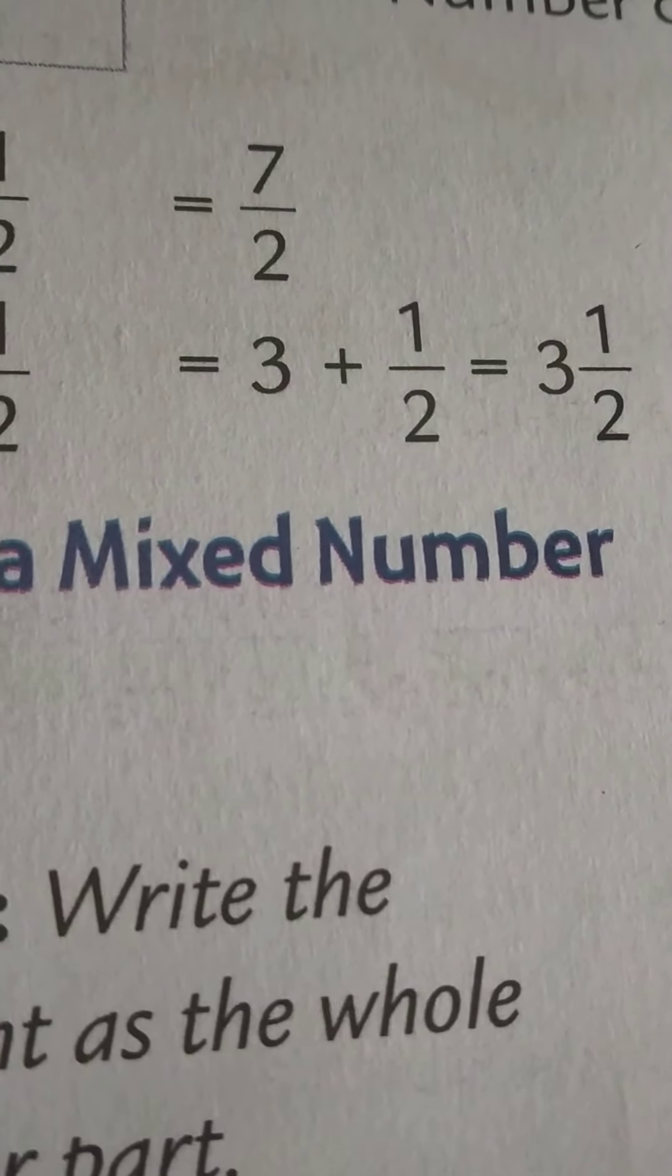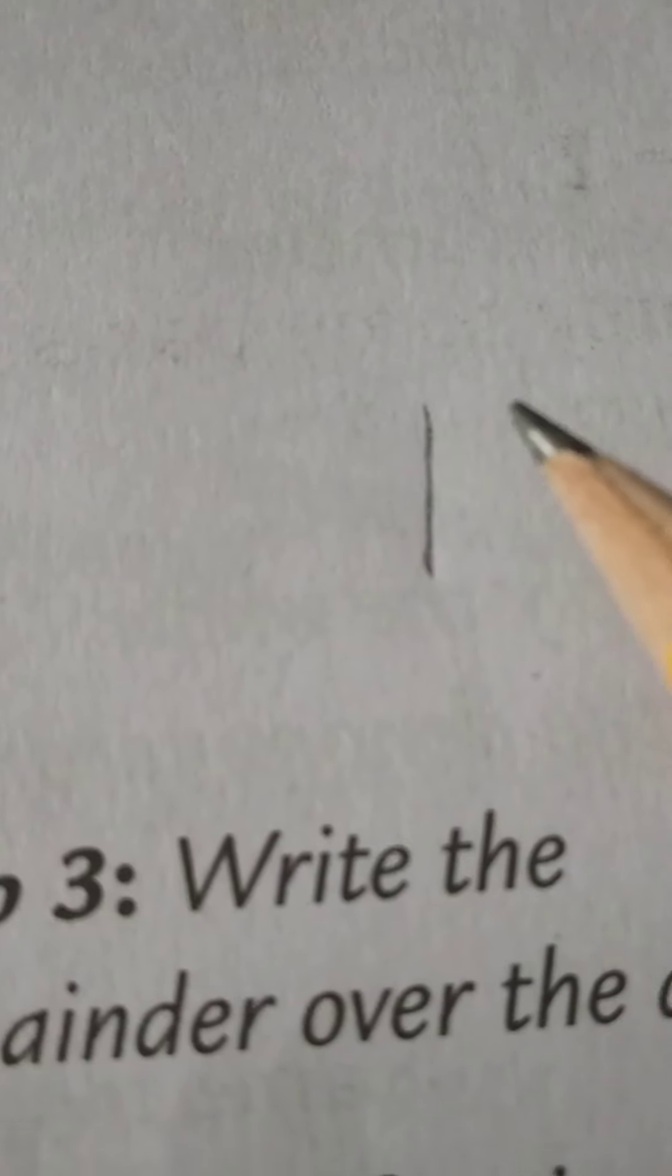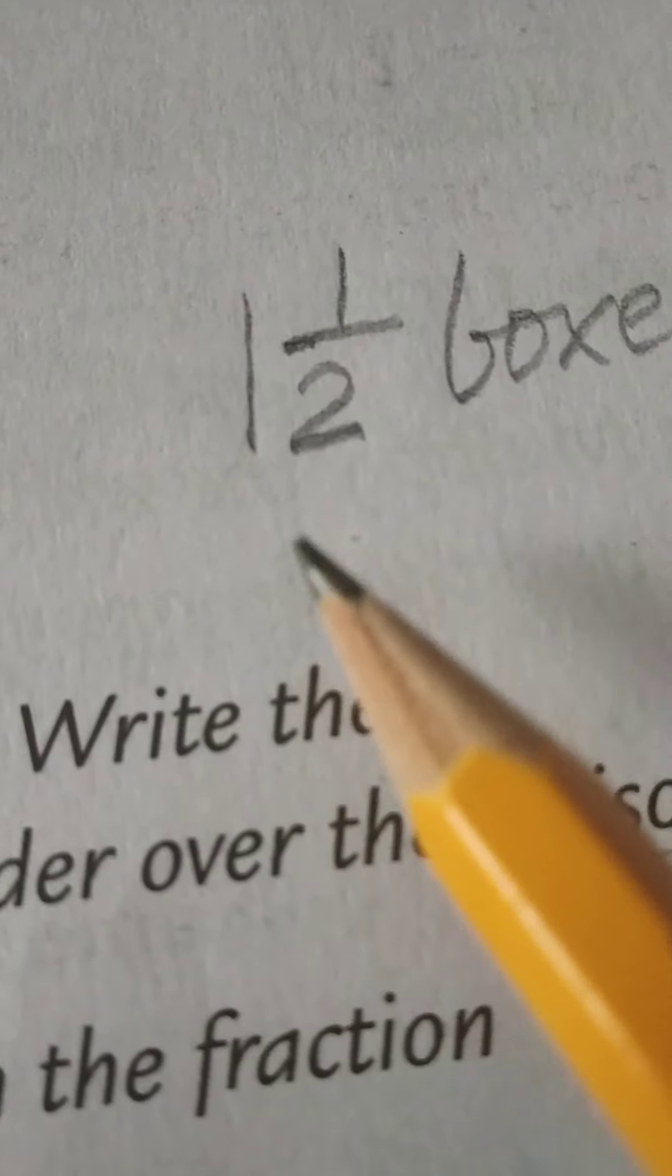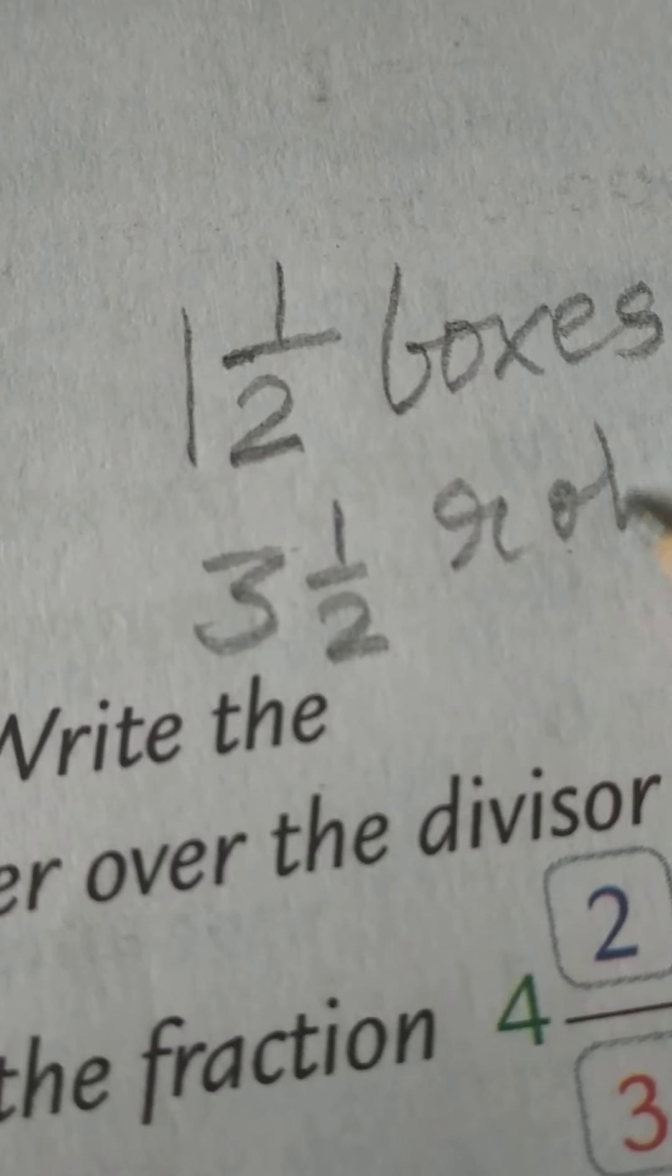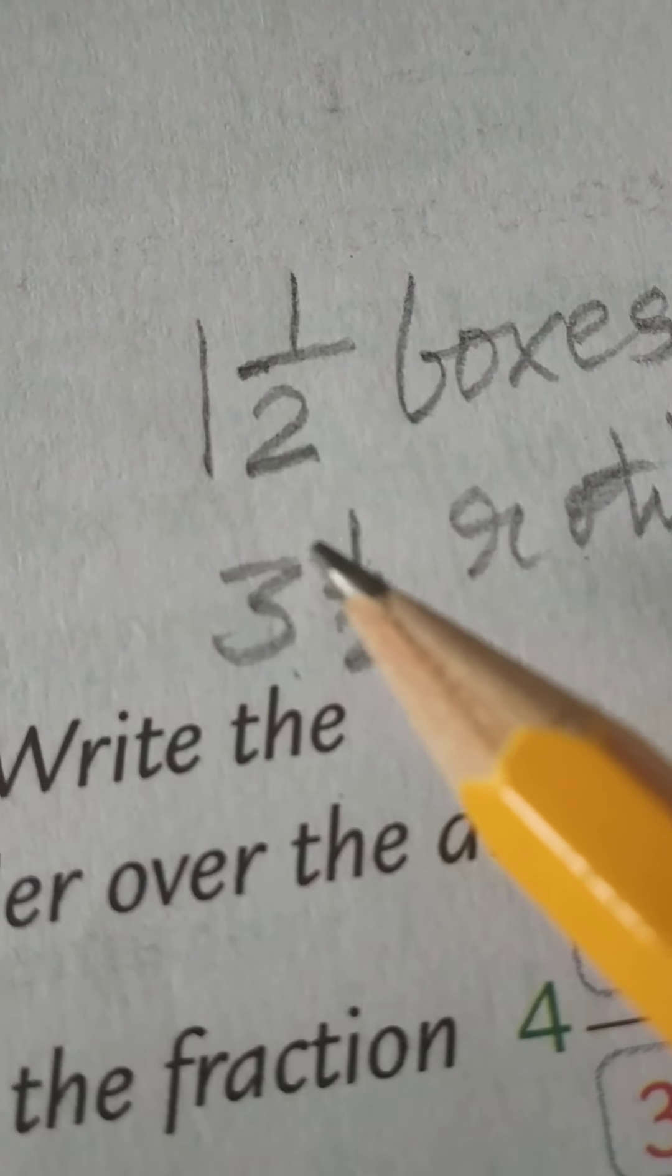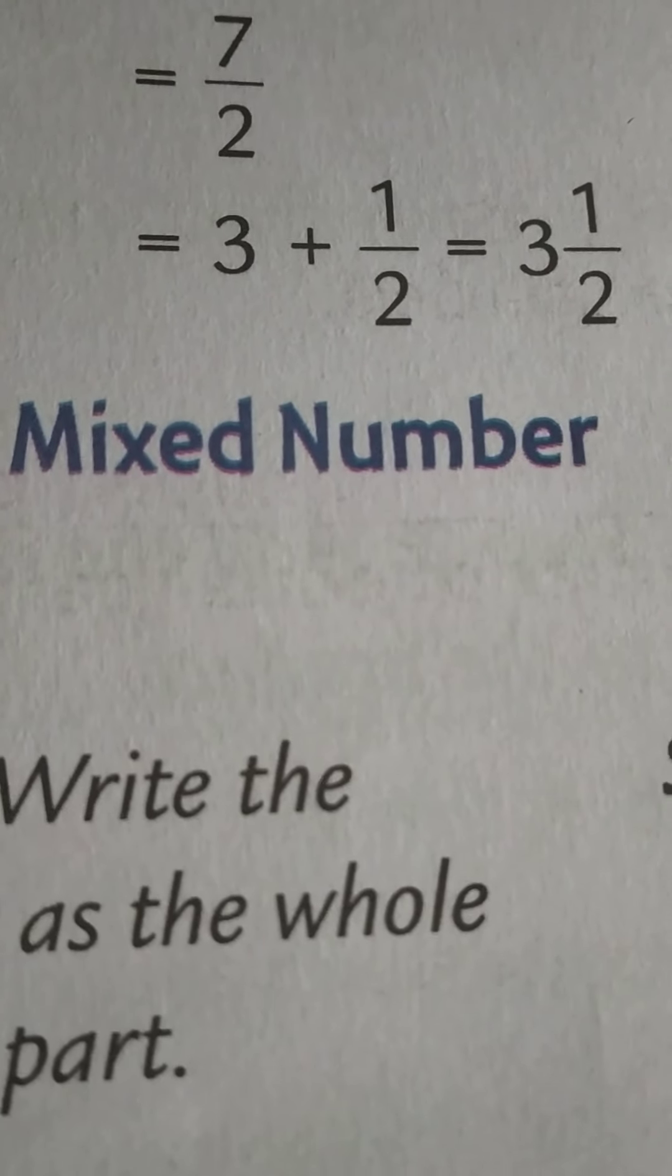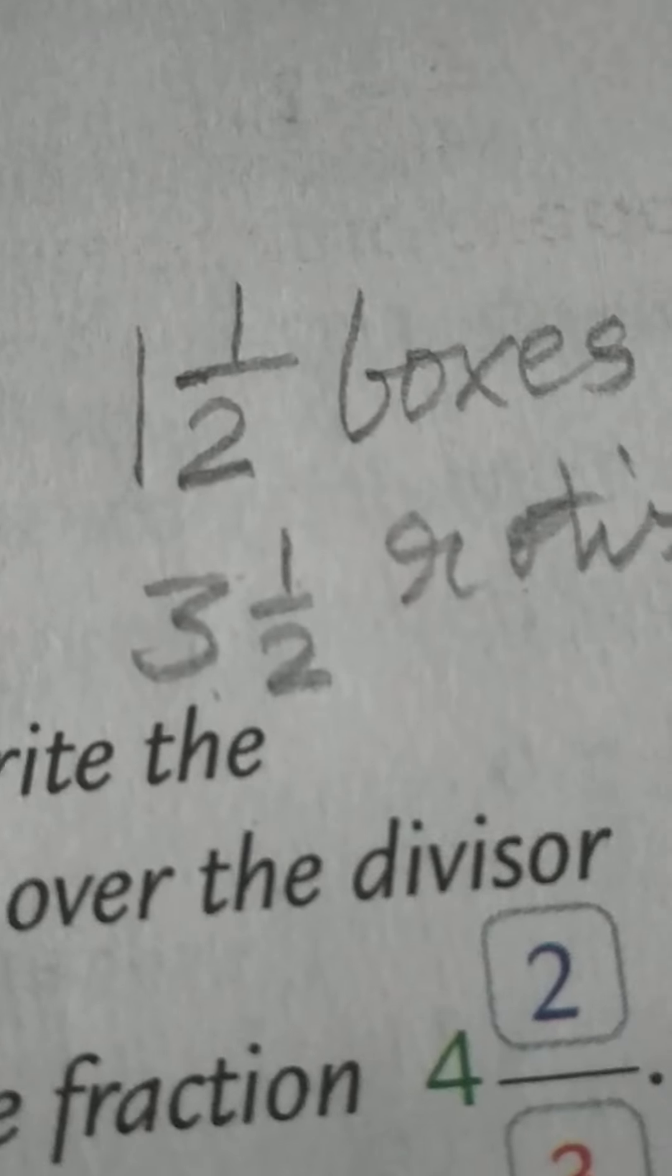Once you have done that, let's look at the idea of a mixed number. What is a mixed number? Well, it's nothing more than a whole number and a fraction together. One and a half boxes of sweets, three and a half rotis. These are mixed numbers. One whole and then a fraction. A mixed number has a whole number and a fraction. Give me different examples.